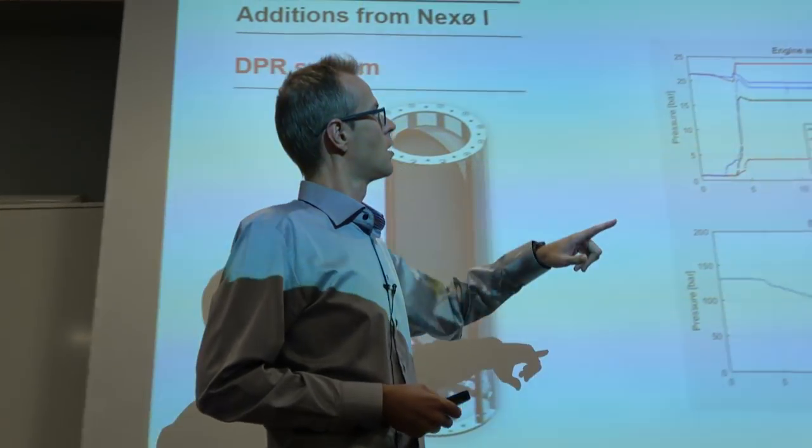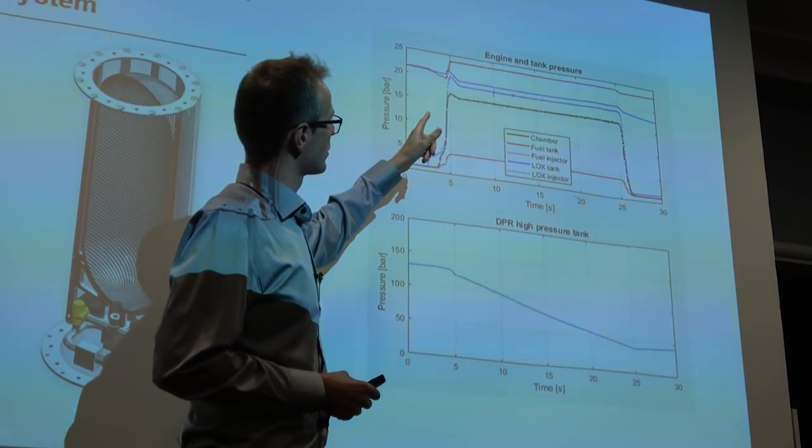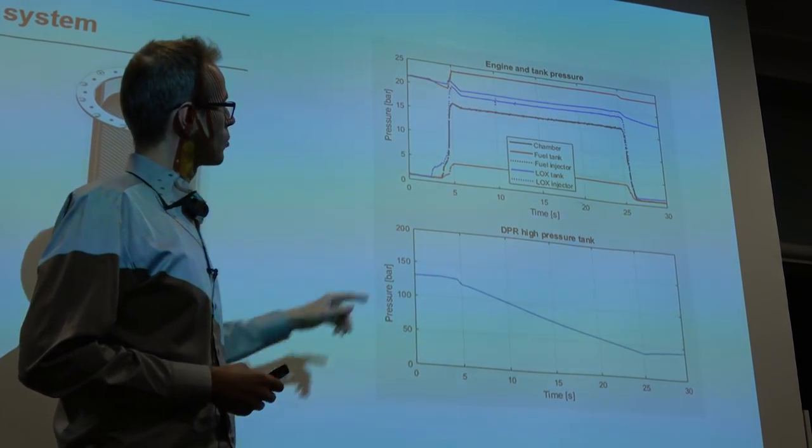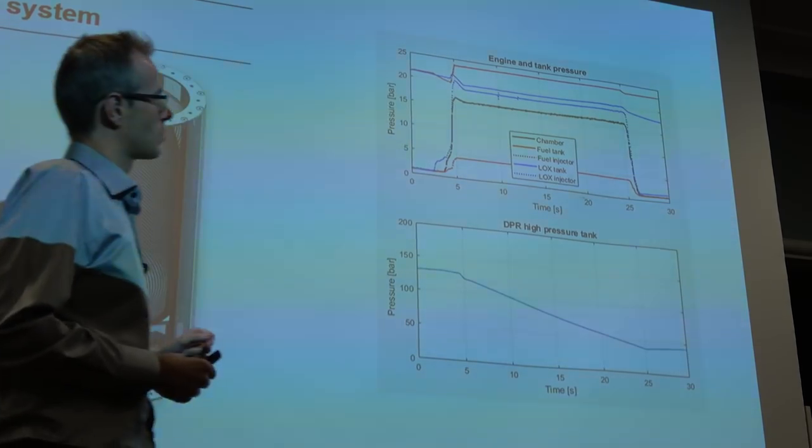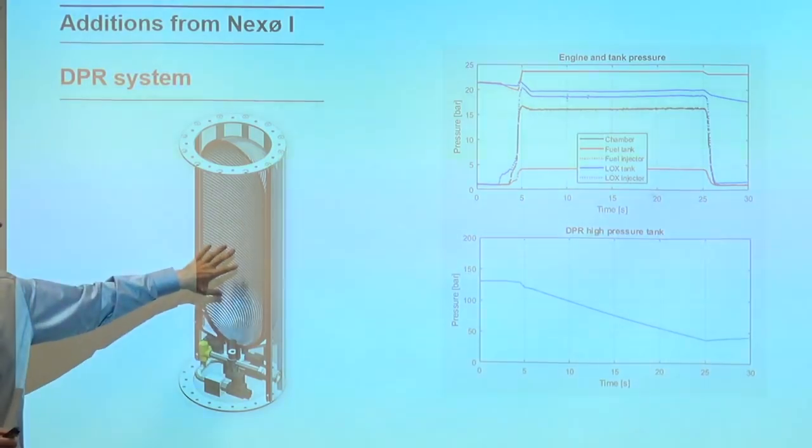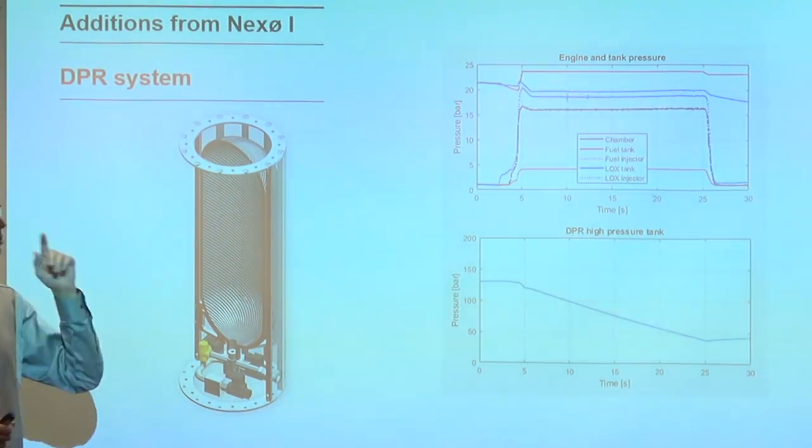In that way it will keep the pressure up in the propellant tank. I have some test data over here from a static test. You can see the propellant tanks, the red and the blue, are totally flat when the engine is running, and the combustion chamber pressure is the black curve. On the bottom graph you can see the pressure in this tank. As we're spending helium, of course it loses pressure.